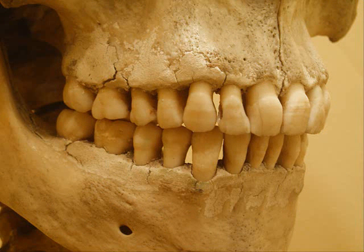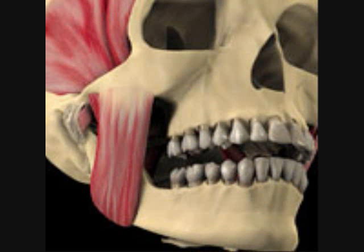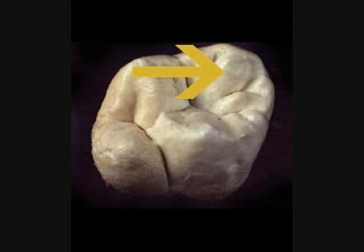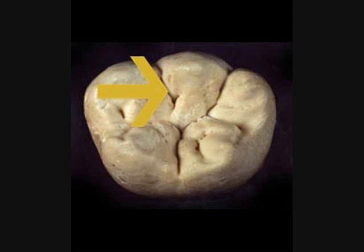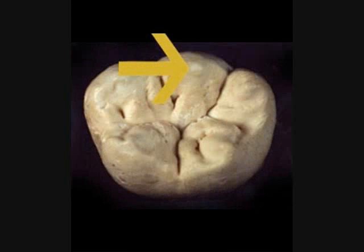The posterior teeth are designed so that the lingual cusps on the maxillary teeth fit exactly into the cup-like fossae of the mandibular teeth. Every groove and ridge on one posterior tooth is designed to fit exactly into a corresponding groove and ridge of the opposing tooth. For example, the mesiobuccal ridge on the upper first molar articulates with the buccal groove and fossa on the lower first molar. The buccal groove on the upper first molar articulates with the buccal cusp of the lower first molar.